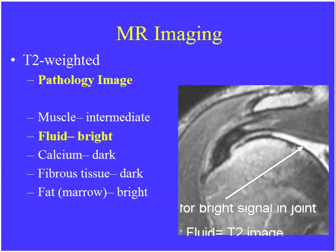When we do a T2-weighted image, we almost always apply fat saturation to make the fluid associated with pathology more conspicuous. If you look at the subcutaneous soft tissues and they're dark, this is usually a T2-weighted image with fat saturation. Same thing with the marrow.